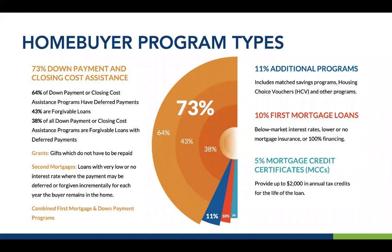Some programs offer deferred payments, meaning you don't make a monthly payment on the down payment assistance loan for some period of time — perhaps for the life of the first mortgage until you refinance, move out, or sell. 43% of down payment assistance programs are forgivable loans, where the assistance becomes forgivable over time — maybe in full, in part, or incrementally. And 38% of all programs are both deferred and forgivable. You also have true grants at closing and some repayable seconds.